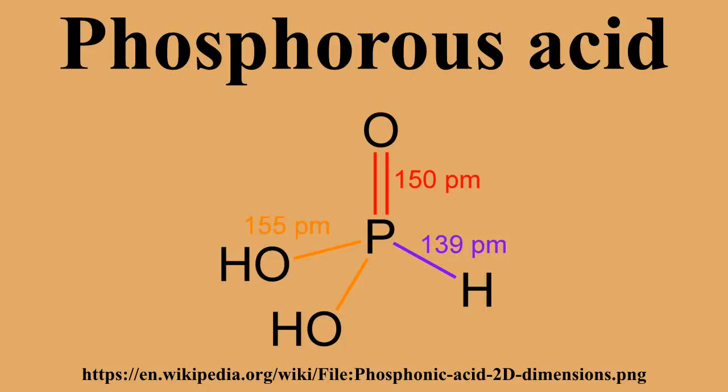Phosphorus acid on heating at 200°C converts to phosphoric acid and phosphine: 4H3PO3 → 3H3PO4 + PH3. The most important use of phosphorus acid is in the production of phosphonates, which are used in water treatment. Phosphorus acid is also used for preparing phosphite salts, such as potassium phosphite.